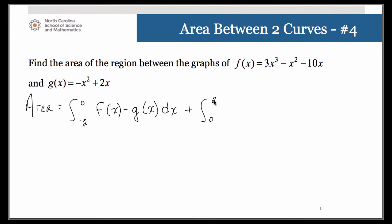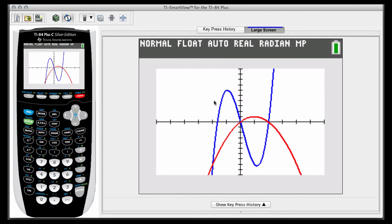Then for the second integral, let's go back to our graph. We're going to go from 0 to 2, but now the quadratic is on top. So we're going to have to think of this as g of x, which is the quadratic function, minus f of x, which was the cubic.